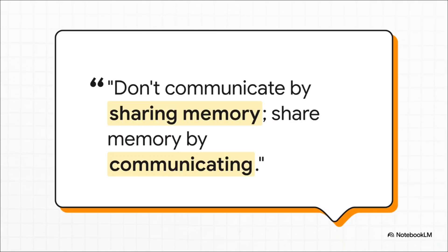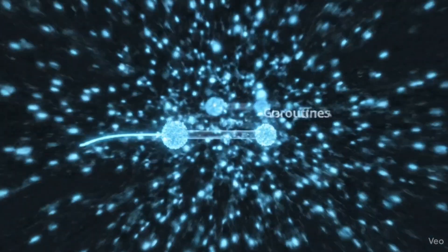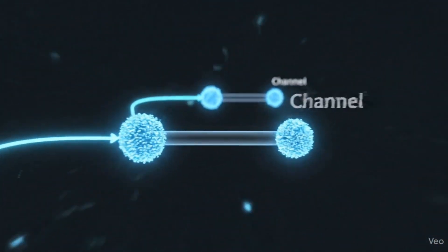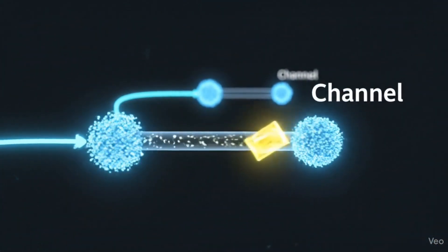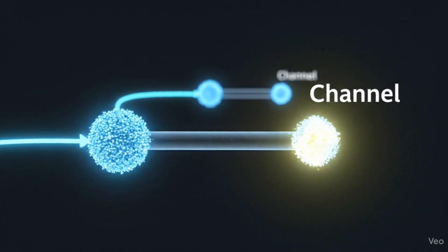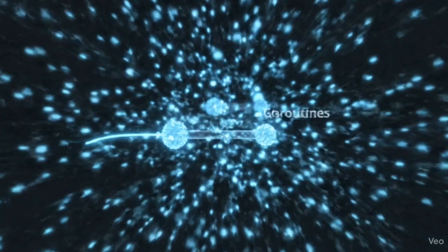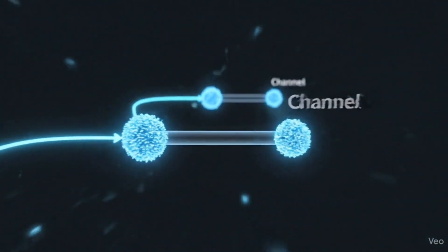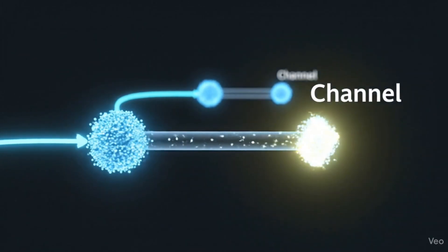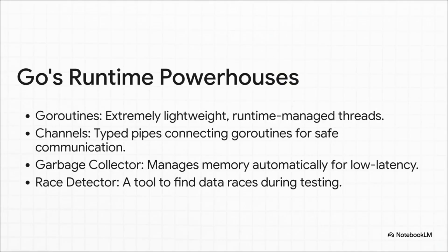Go has your different tasks send messages back and forth through special pipelines — it's a much cleaner, safer way to get things done together. That surface-level simplicity is made possible by powerhouses running in the background: goroutines, which are super lightweight threads you can spin up by the thousands or millions; channels, which are those safe pipelines; a garbage collector that handles all memory cleanup; and even a built-in race detector to catch data race bugs during testing.